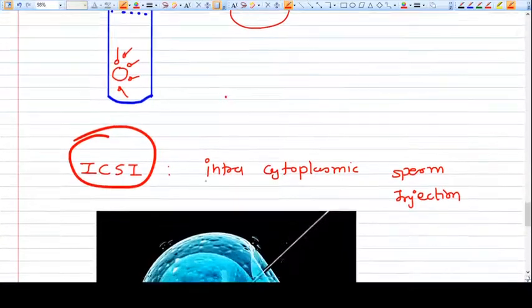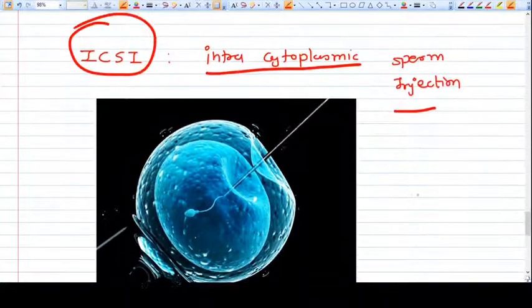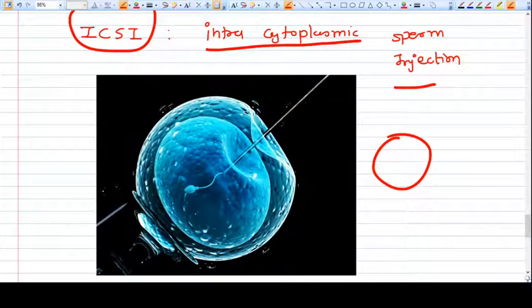What is ICSI? Intracytoplasmic sperm injection. That means we take an ova, we hold the ova microscopically, and we inject one sperm into the ova. These are very latest technologies where we can actually hold one ova and put a sperm into that ova.